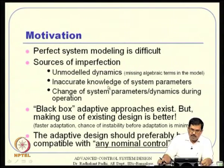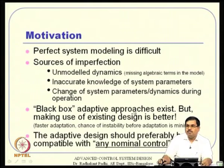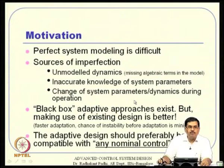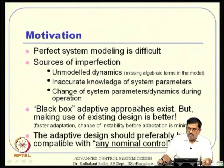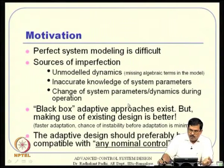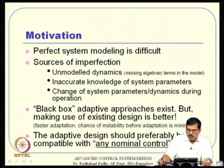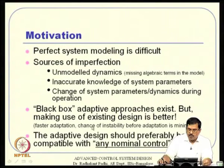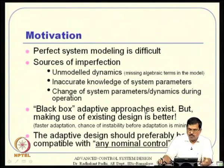In adaptive control, there are black box adaptive approaches where the entire system dynamics can be captured through a neural network, and based on that neural network model you synthesize the control. That means there is no prior information — the system is identified as you go along and with that identified model you keep applying your control. But what happens is you take a long time to adapt and there is also a chance of instability before adaptation, because you are starting with almost no information.